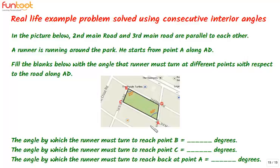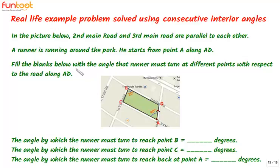Here is our problem. We have a park ADBC where AC is along third main road and DB is along second main road. It is given that second main road is parallel to the third main road, which means AC is parallel to DB. We have a runner who starts from point A and runs along AD. We have to fill in the blanks with angles that the runner must turn at different points with respect to the road along AD.